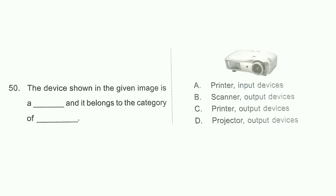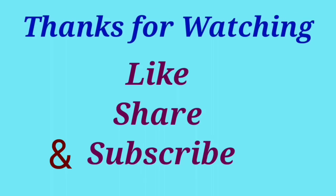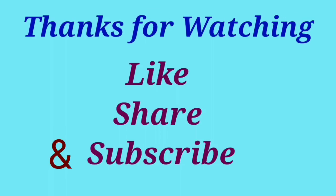Question number 50: The device shown in the given image is a projector, and it belongs to the category of an output device. So option D is correct. Thanks for watching — like, share, and subscribe to get more videos. Bye-bye.